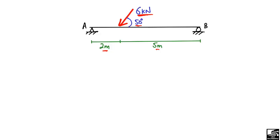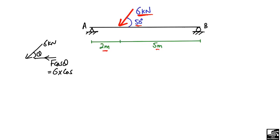The load acting is 6 kN, making an angle θ with the horizontal axis. The horizontal component of this load is F·cosθ — in this case 6 multiplied by cos 50°, which gives us a horizontal component of 3.85 kN.